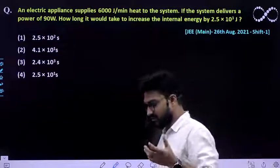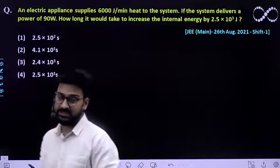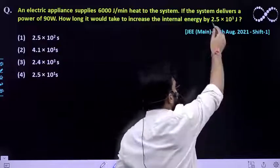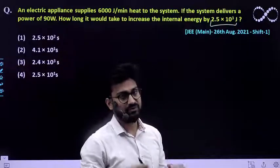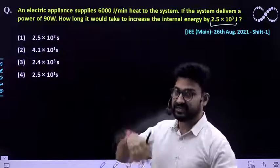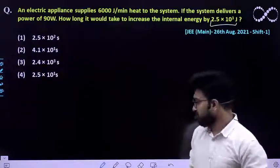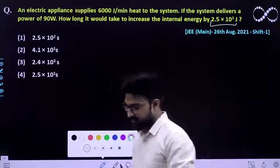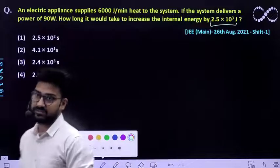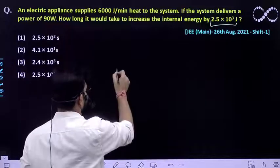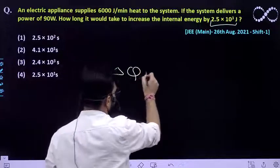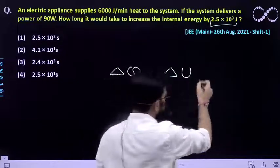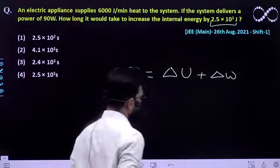So that means work has been done on the system, causing its internal energy to increase by this amount. You need to find out the time for which the system gains this much internal energy. We already know the relationship: heat supplied equals the change in internal energy plus the work done by the system.